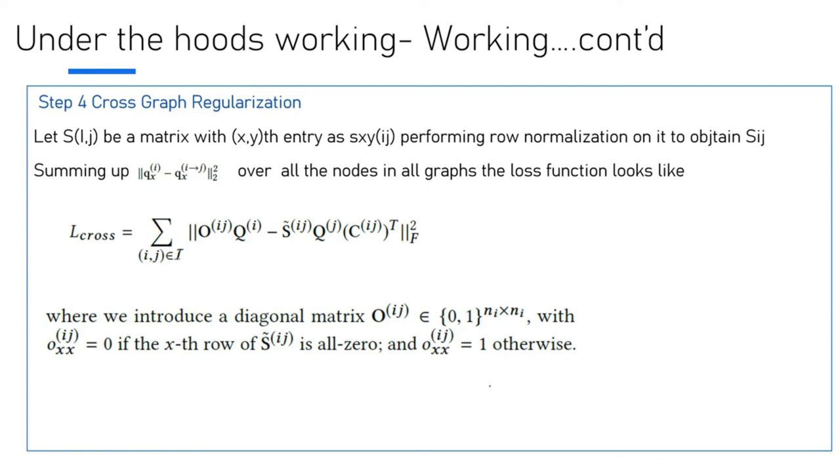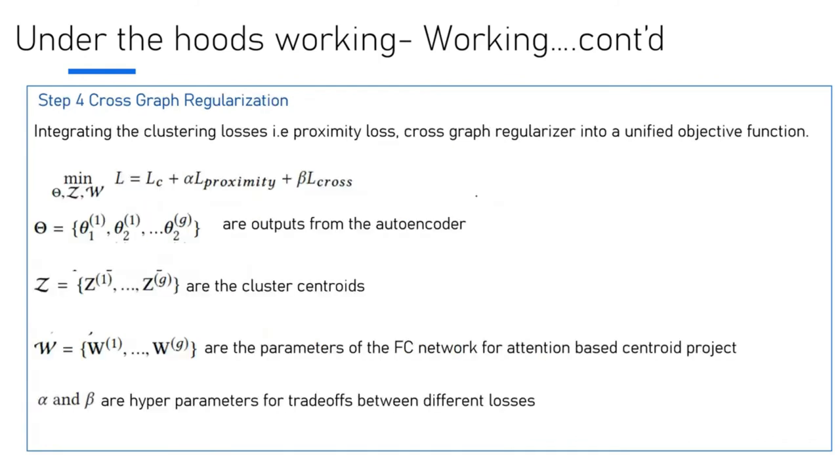Moving on, we need to get to a point where we're creating the clustering losses, the proximity losses, the cross-graph regularizer, and the defined objective function, because that's what we need at the end of the day. It's made of theta, Z, and W. L_C is the clustering loss, alpha times L_proximity, and beta times L_cross. Alpha and beta are hyperparameters for trade-off between losses. Theta turns out to be theta_1 to theta_2G, the outputs from the auto-encoder standpoint. Z are the cluster centroids, W is the weight parameter for the attention-based centroids.